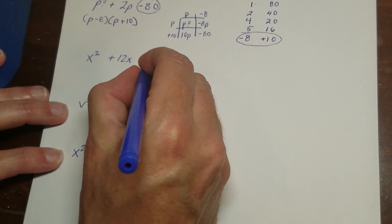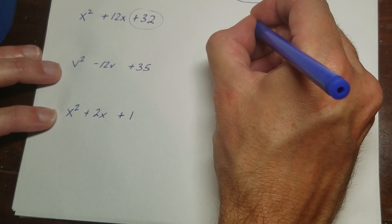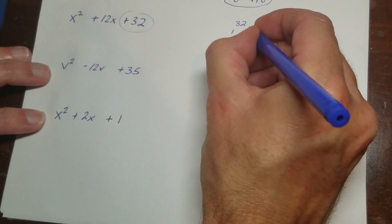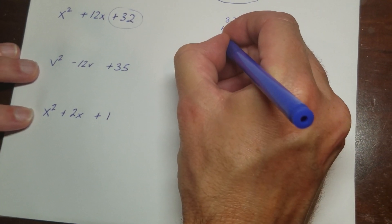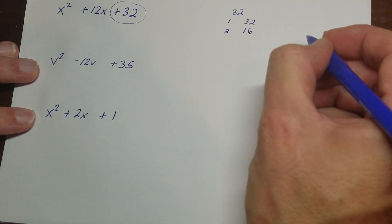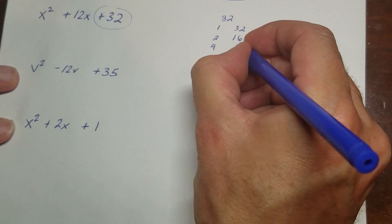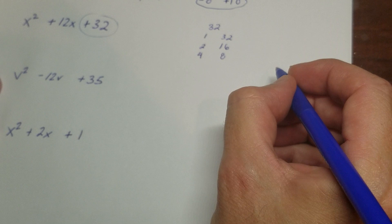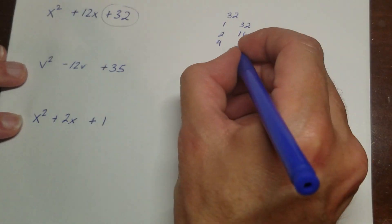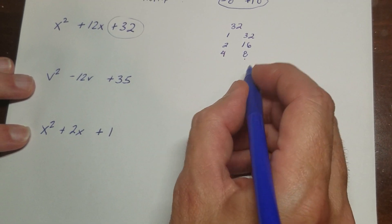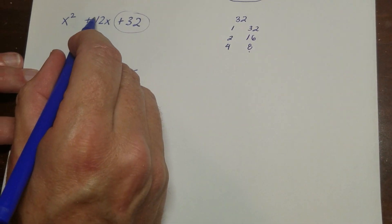So the next one, I have 32 on the end. So I'm going to do a 32. I have 1 and 32, 2 and 16. 3 doesn't work. 4 works with 8. 5 doesn't work. 6 doesn't work. 7 doesn't work. And then I'm at 8. So this is everything I have.